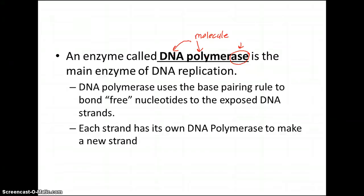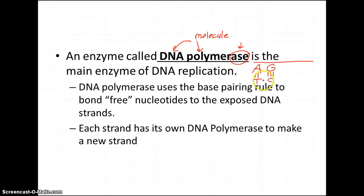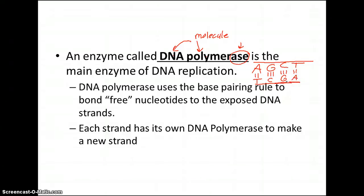DNA polymerase uses the base pairing rule — also called Chargaff's rule. Every time there's an A along the sugar phosphate backbone, it brings in a T that's floating around and puts two hydrogen bonds. Every time it sees a guanine, it brings in a cytosine and makes the phosphodiester bonds. If there's a C, Chargaff's rule says you have to pair that with a G and make phosphodiester bonds. And if there's a T, the base pairing rule says you have to put an A with that and make the phosphodiester bond.